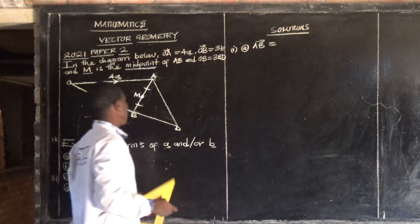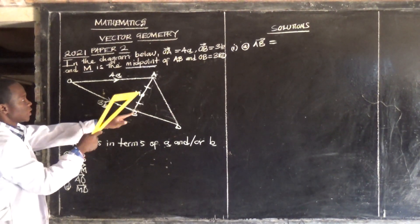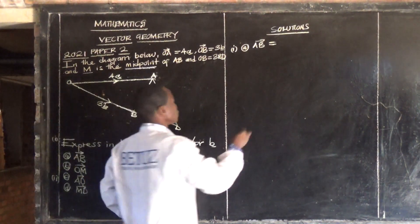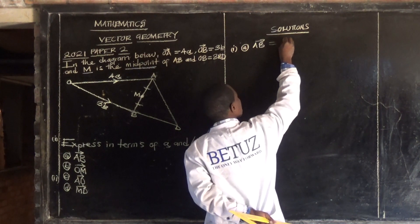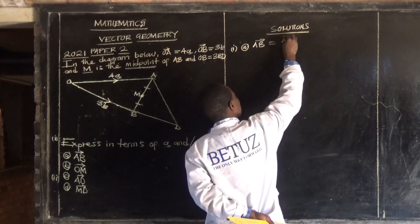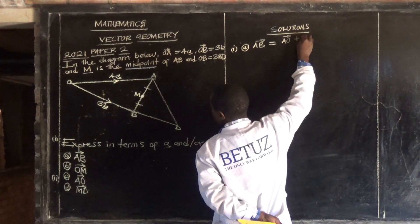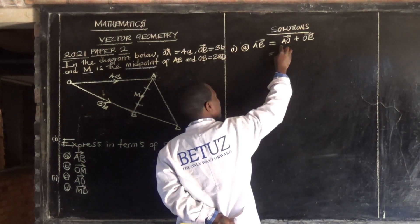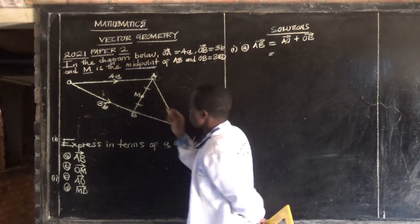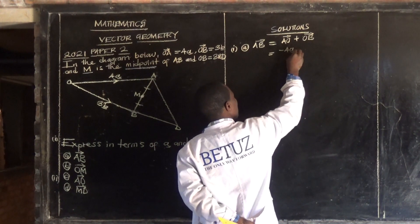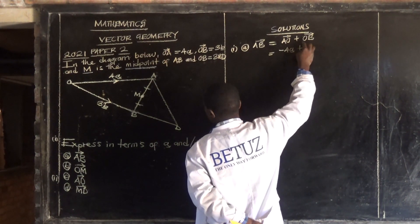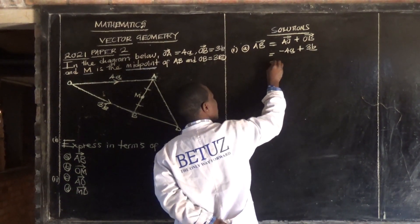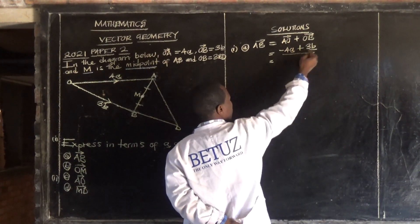How can we move from A to B? From A to B, you can move via O: A to O plus O to B. So AO plus OB. What is our AO? Negative 4 vector a, plus what is our OB? Three vector b.